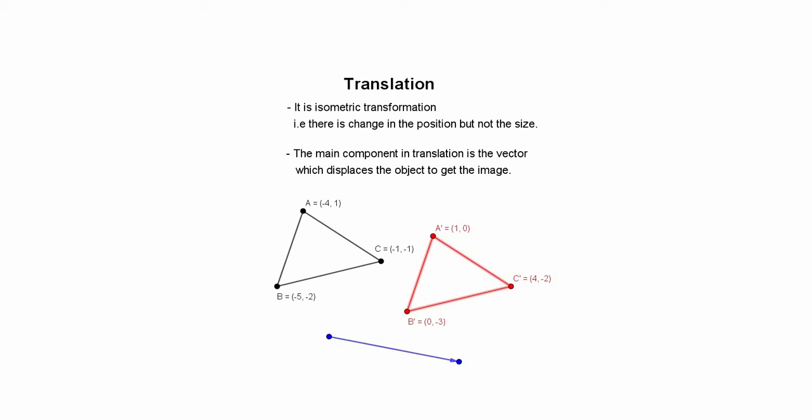That is, A' equals to (1, 0), B' equals to (0, -3), and C' equals to (4, -2).